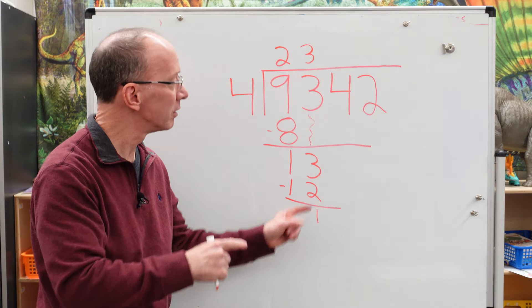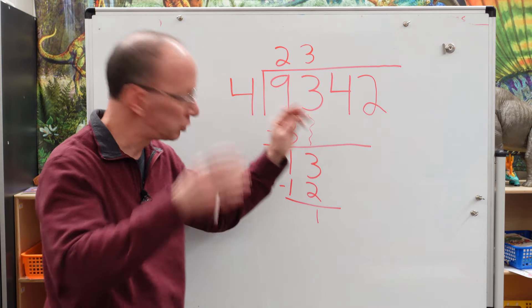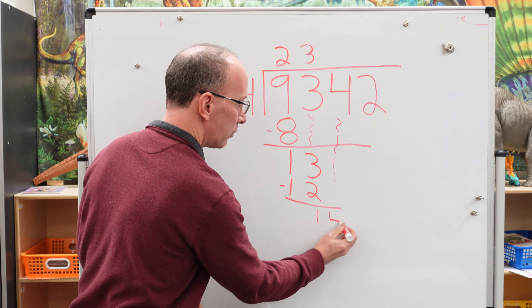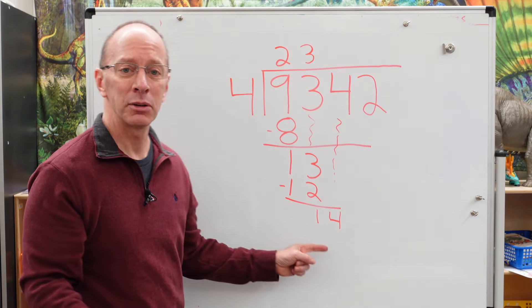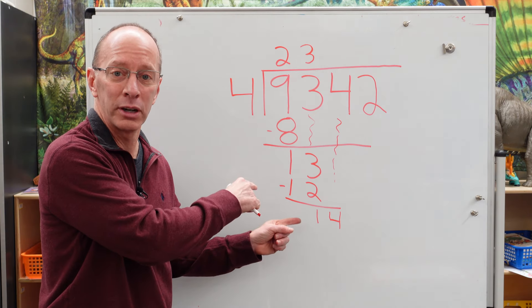What do we do? We go to the next number now. All right. Hey, we have a four, don't we? Just drop it down. Drop it down. Bring. Right here. Four. How many times could we put four into 14? Well, we did this one. Four times three was 12.